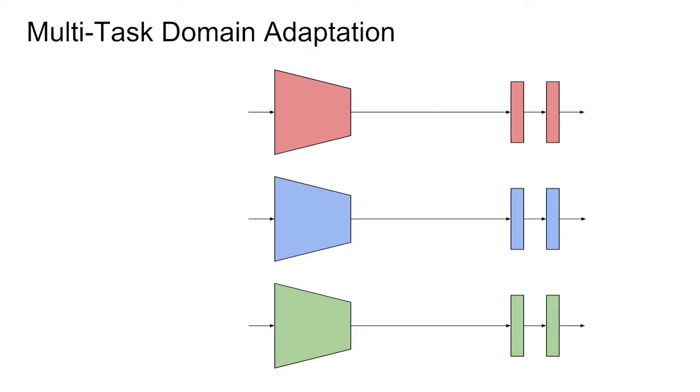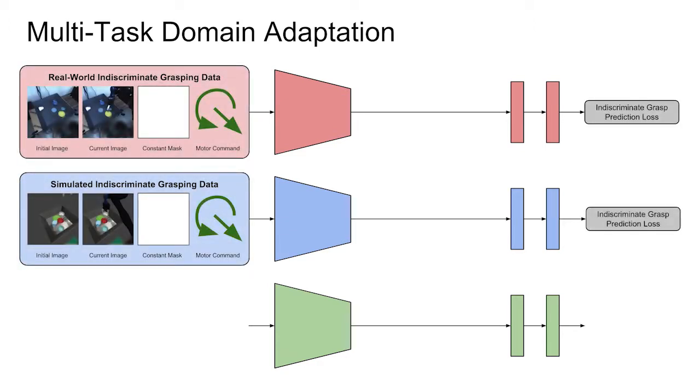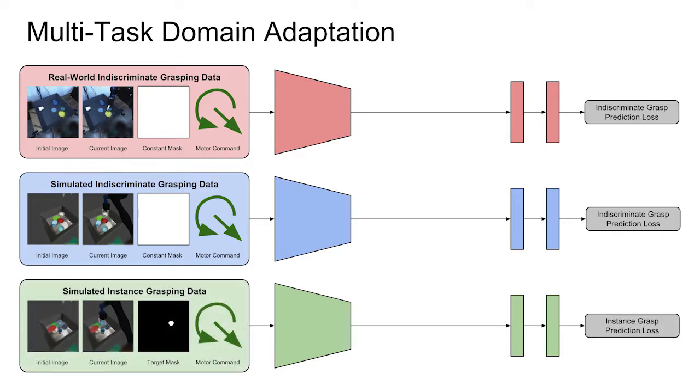We propose a multi-task domain adaptation framework to train our neural network model. The framework is composed of three grasp prediction towers and a domain classifier. Each tower takes training data from one of the three task domains: real-world indiscriminate grasping, simulated indiscriminate grasping, and simulated instance grasping.